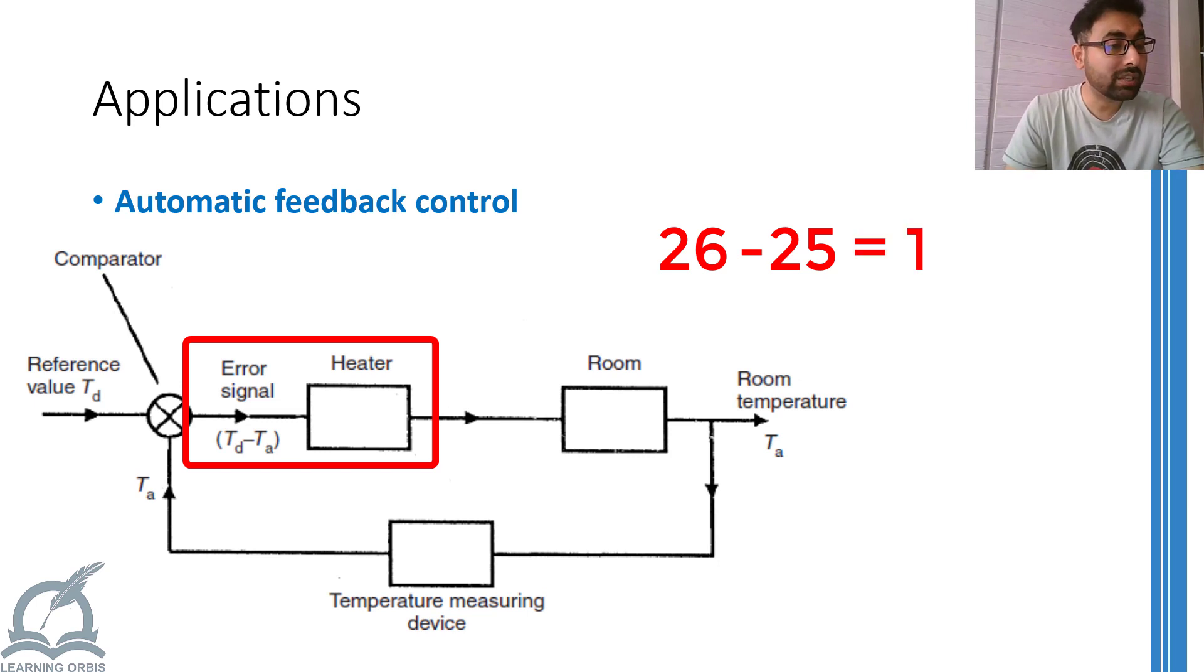Now, this error will once again turn on the heater but not with as much power as an error of 8 degrees Celsius used. So, the heater will slightly heat the room unless temperature approaches 26 degrees once again.